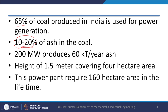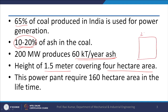If we take a 200 megawatt power plant, it produces 60 kilotons of ash per year. To have an idea about that quantity, it would cover 4 hectares of area at a height of 1.5 meters — approximately 5 feet height — covering a 200 by 200 meter area, which is 4 hectares since 1 hectare is 100 square meters. This much area would be covered by ash produced in a 200 megawatt plant in just 1 year.